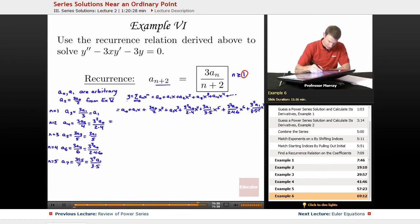Again, we can segregate out the A0 terms and the A1 terms. A0, it looks like we've got 1 plus 3 halves X squared, plus 3 squared over 2 times 4 X to the 4th, plus 3 cubed over 2 times 4 times 6 X to the 6th.